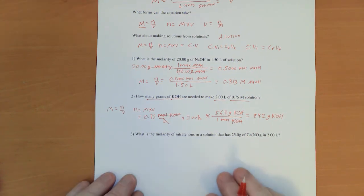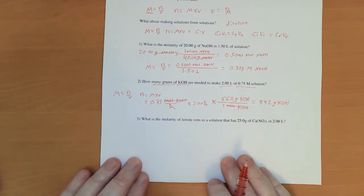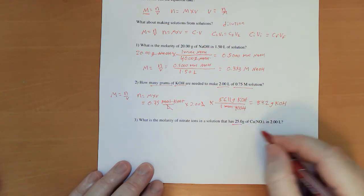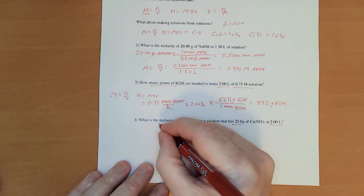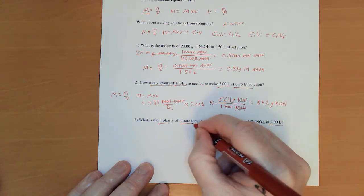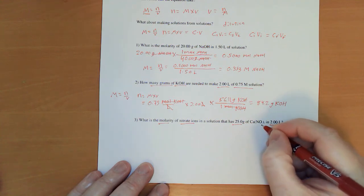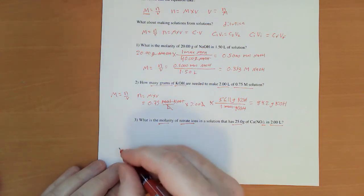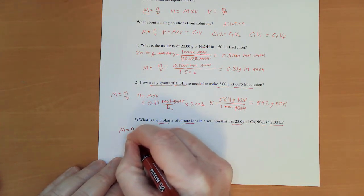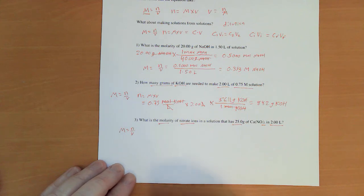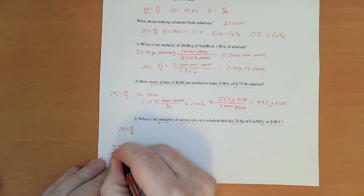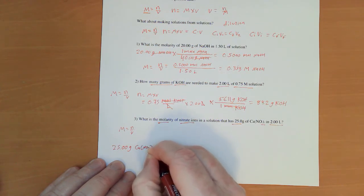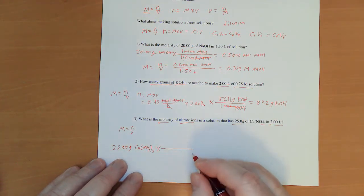Now, in our next question, what we're going to be looking at is a really important concept. We've got 25 grams calcium nitrate, 2 liters. We want to know the molarity of the nitrate ions. And there are two nitrate ions per molecule. So molarity equals moles over volume. So let's go with the 25.00 grams CA NO3 sub 2 times.